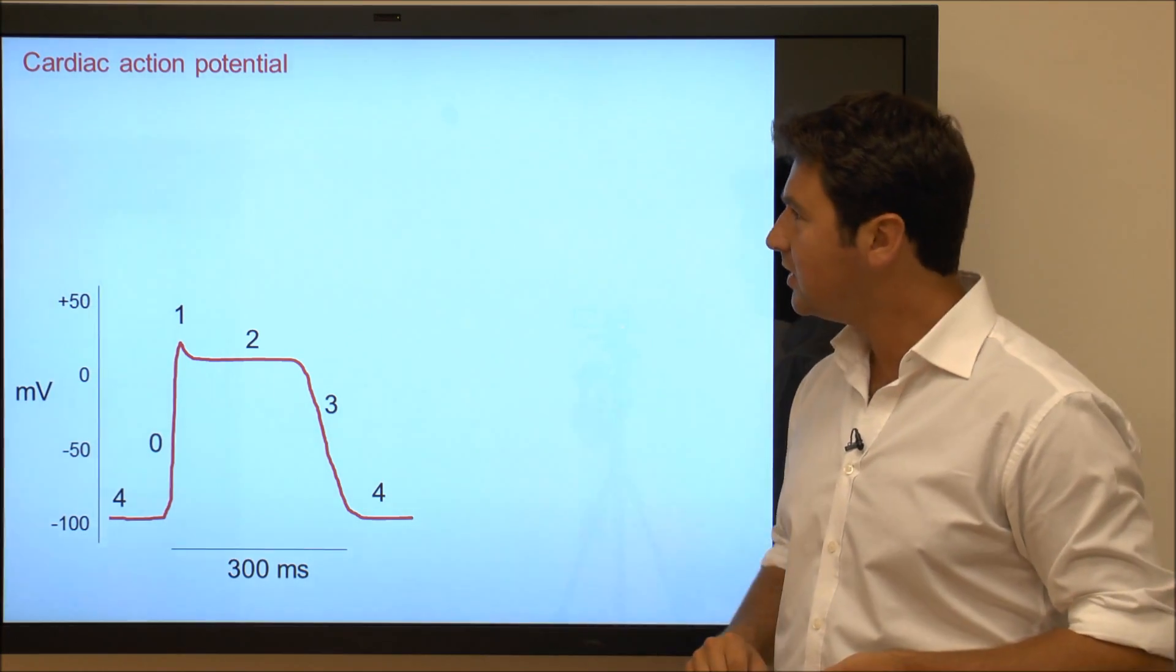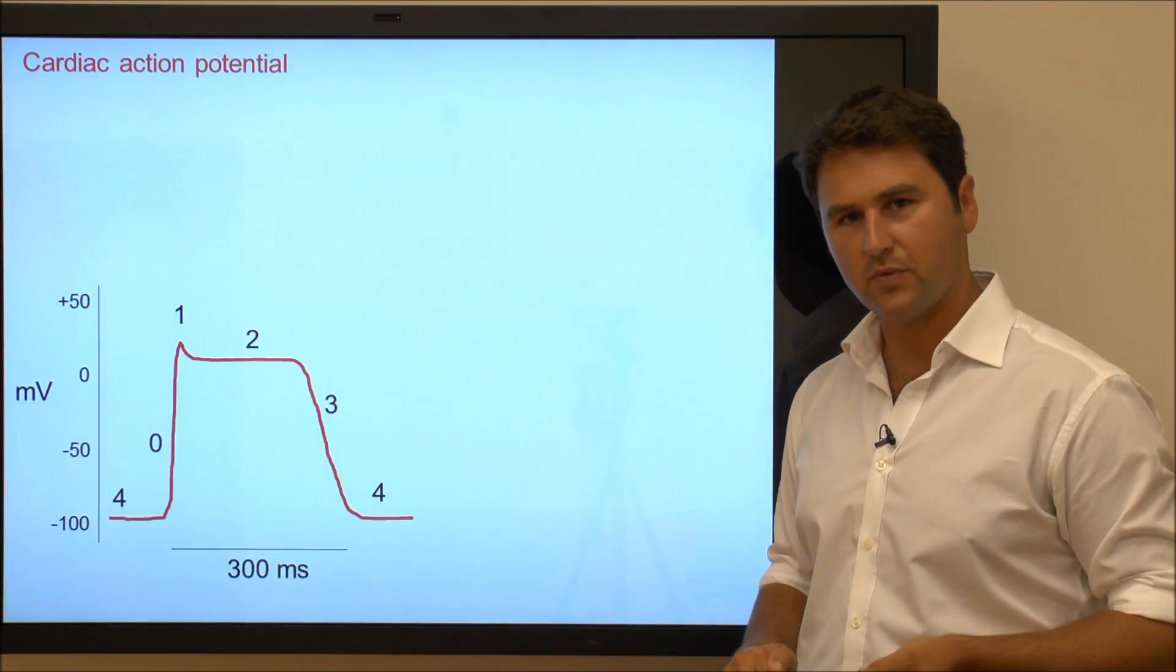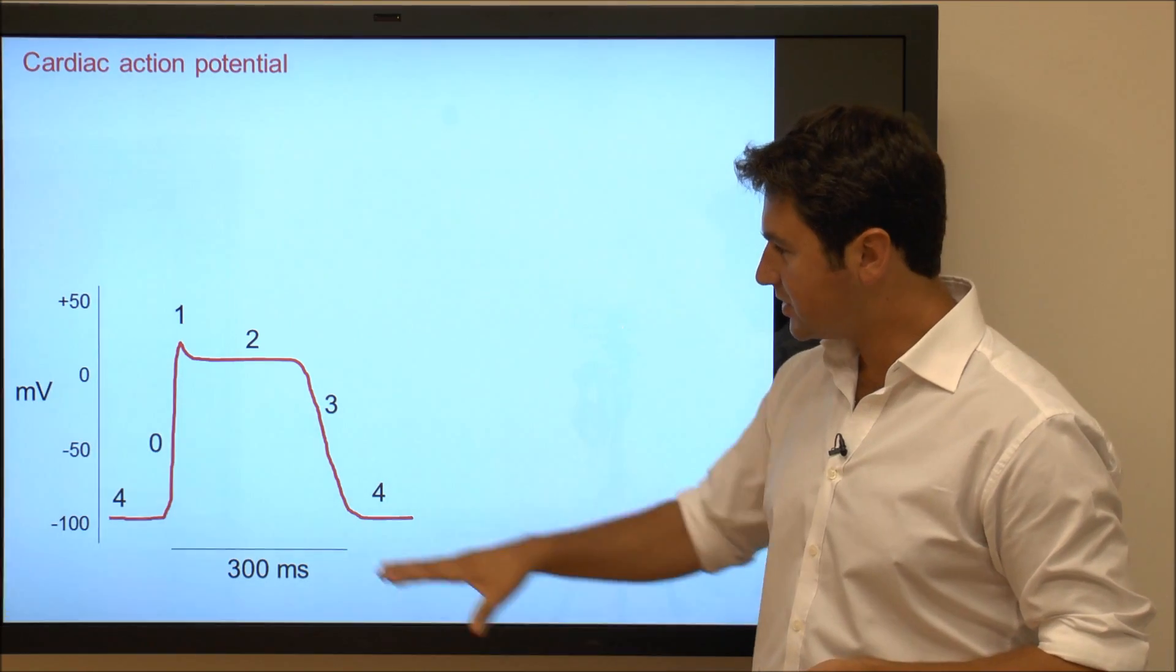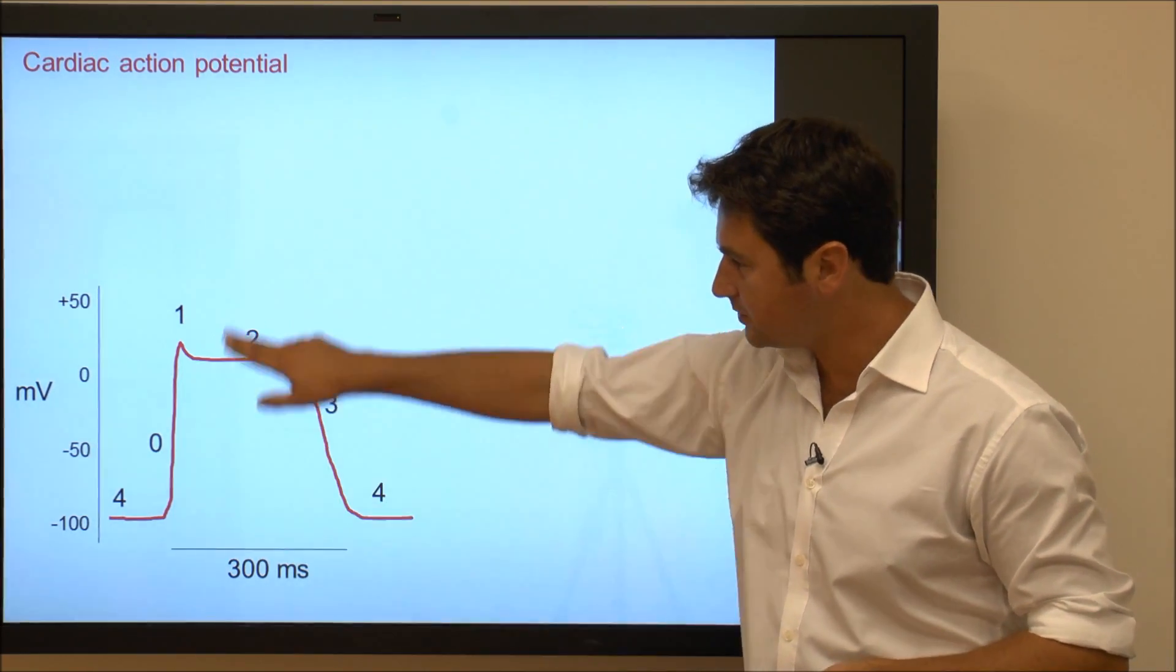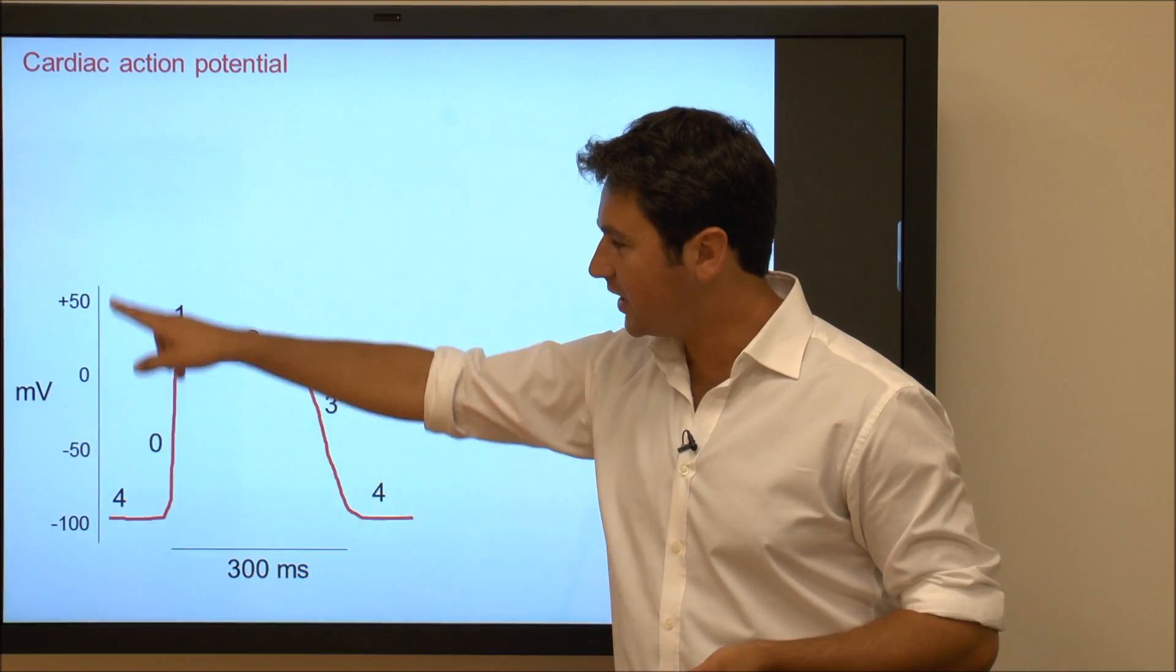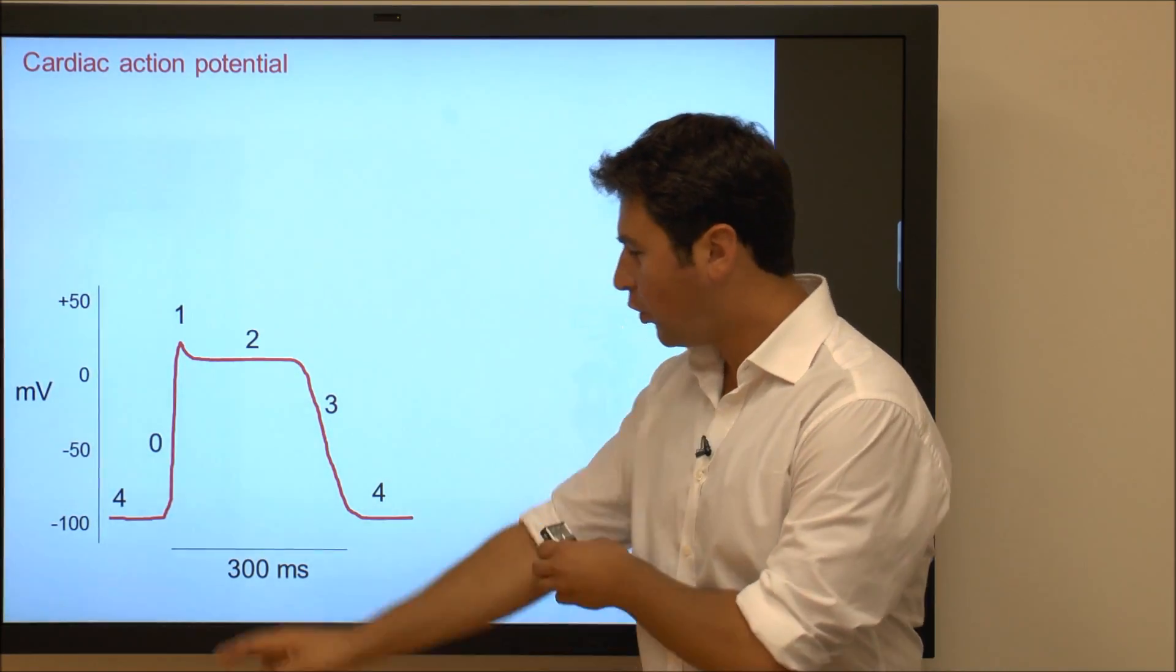So this is your classic cardiac action potential from ventricular muscle with different phases clearly shown, and it's plotted as millivolts over time.